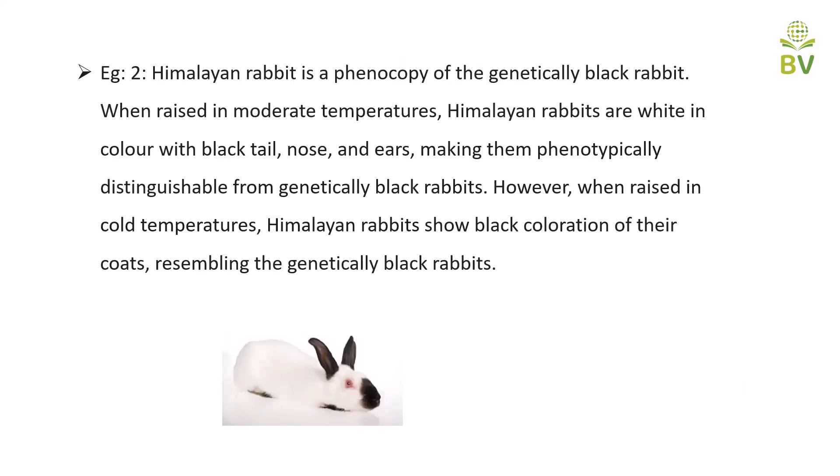The next example is the Himalayan rabbit. The Himalayan rabbit is a phenocopy of the genetically black rabbit. When raised in moderate temperature, Himalayan rabbits are white in color with black tail, nose, and ears, making them phenotypically distinguishable from genetically black rabbits. However, when raised in cold temperature, Himalayan rabbits show black coloration of their coat, resembling the genetically black rabbits.